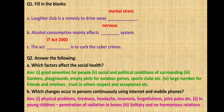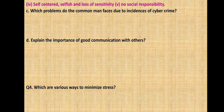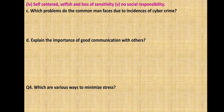In young children, there is penetration of radiation in bones due to internet rays and mobile phones. Then solitary and non-harmonious relations develop. The person becomes self-centered and selfish with loss of sensitivity. The fifth point is no social responsibility — such people who become self-centered and selfish lose sensitivity towards others and never take any social responsibility, thus their social health is disturbed.